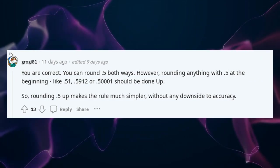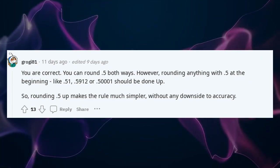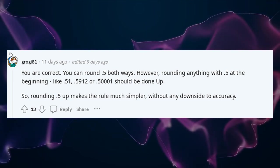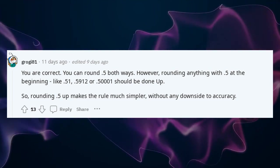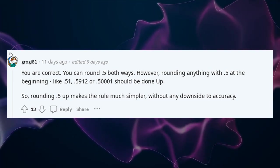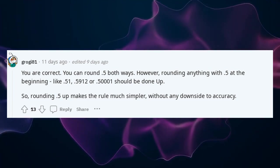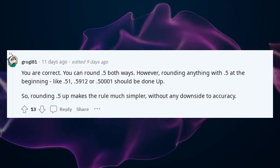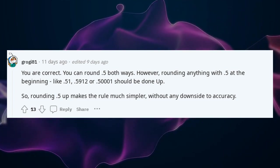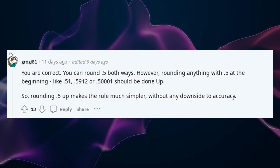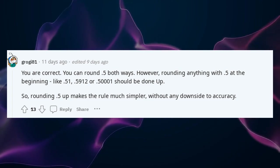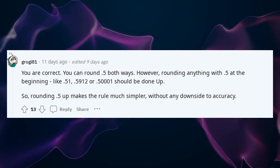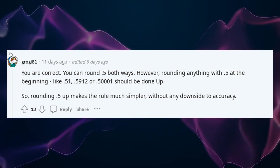You are correct — you can round 0.5 both ways. However, rounding 0.51, 0.52, etc. should always be done up. Rounding 0.5 up makes the rule much simpler without any downside to accuracy.